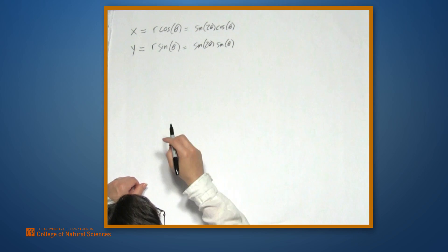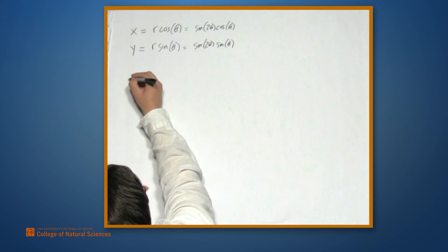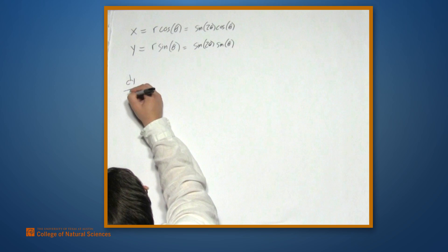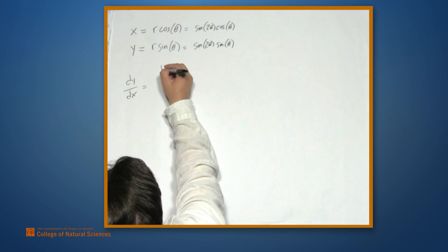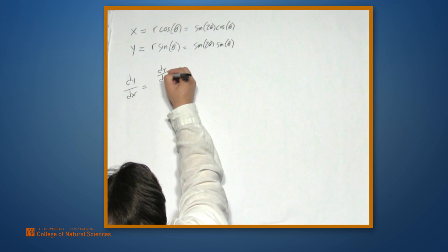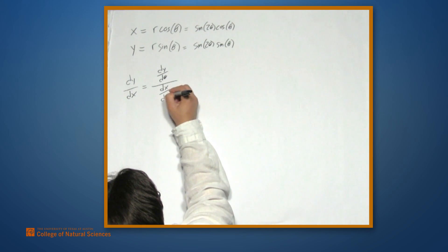Now, with this parameterization, we can find the slope of the tangent line using what we already know about tangent lines with parametric curves. We are looking for dy dx. This is equal to dy d theta over dx d theta.